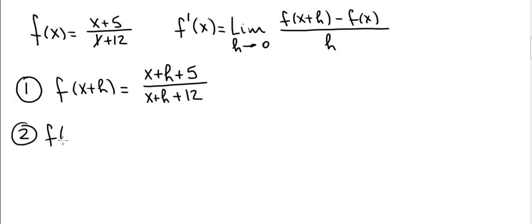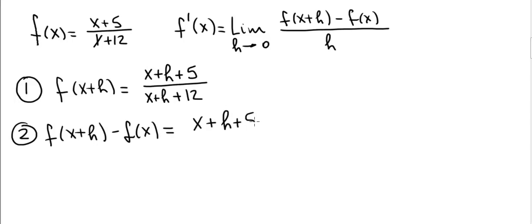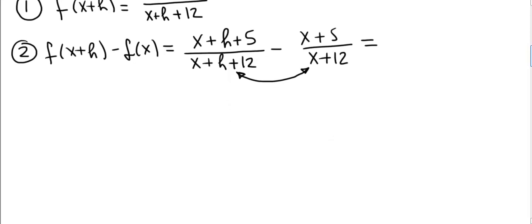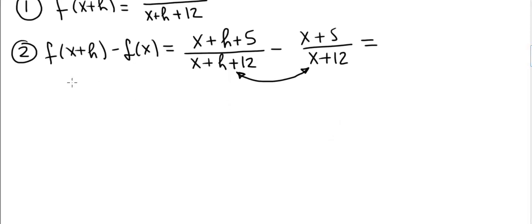Step 2: compute f of x plus h minus f of x and simplify as much as possible. This is x plus h plus 5 divided by x plus h plus 12, minus x plus 5 divided by x plus 12. The common denominator will be the product of the two denominators, so we're going to multiply each of the terms by the respective other denominator divided by itself.